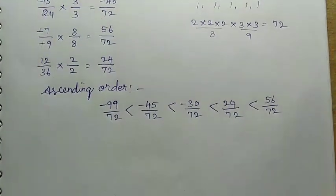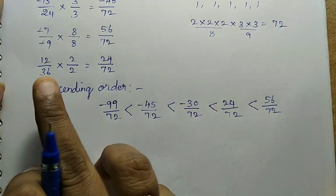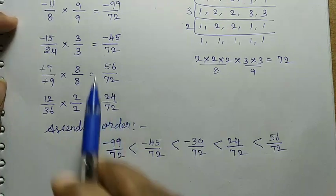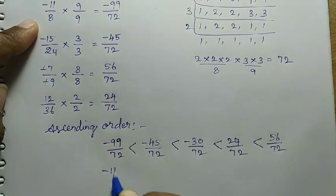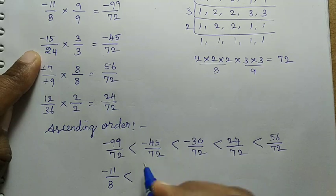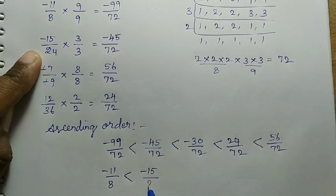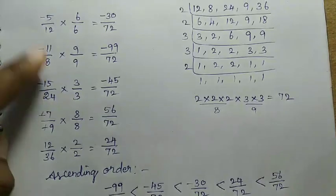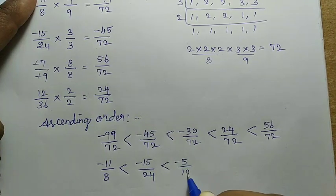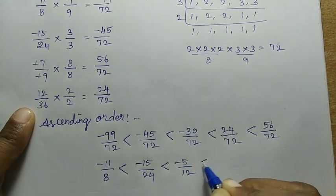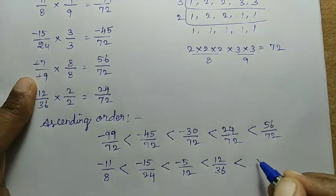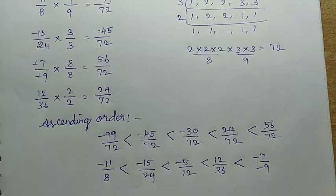But we need to write back the original (given) values. So minus 99/72 corresponds to minus 11/8; minus 45/72 corresponds to minus 15/24; minus 30/72 corresponds to minus 5/12; 24/72 corresponds to 12/36; and 56/72 corresponds to minus 7 divided by minus 9. So ascending order: minus 11/8 < minus 15/24 < minus 5/12 < 12/36 < minus 7 divided by minus 9.